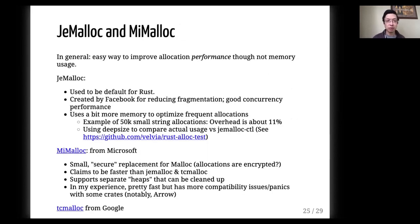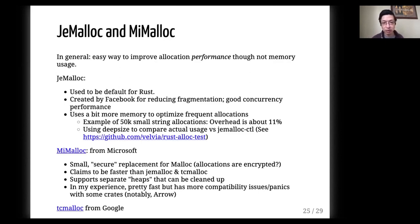We'll talk about a few extra memory allocation topics. In Rust, you can switch your memory allocator. There are two popular alternatives to the standard allocator. One is JEMalloc, which originally came from BSD but was popularized by Facebook and was created for reducing fragmentation and concurrency. It has a bit of overhead in terms of memory used, but it is faster than the standard allocator. Another one is mimalloc from Microsoft, designed to be a small, secure replacement for malloc. In practice, it is also faster.